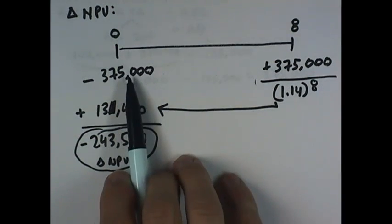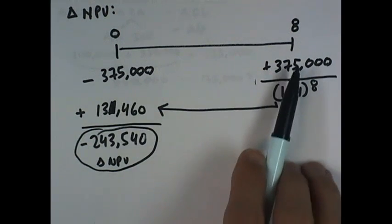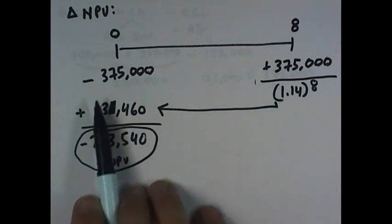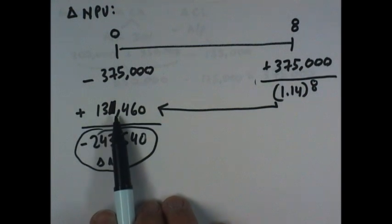The net effect is that this net working capital lowers the project's net present value by $243,540. It's just one component of a larger project, so it is a necessary investment, and it's going to lower the NPV, but you can't do the project without it.